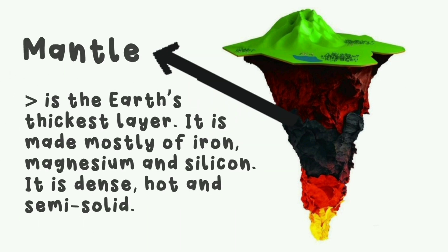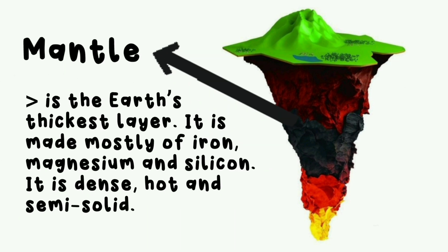The mantle is the Earth's thickest layer. It is made mostly of iron, magnesium, and silicon. It is dense, hot, and semi-solid.